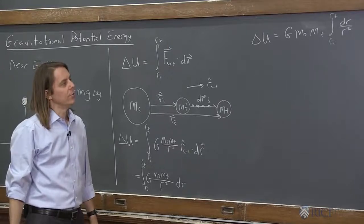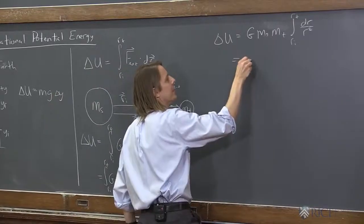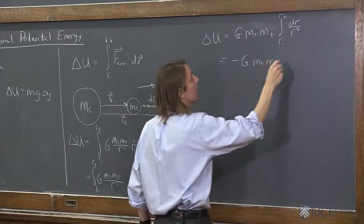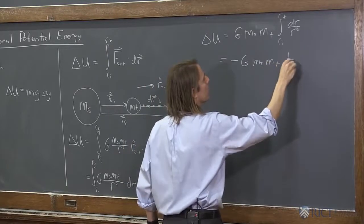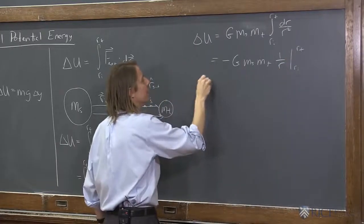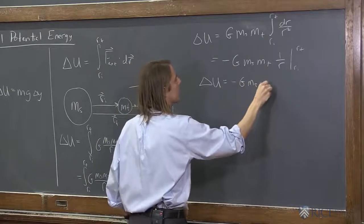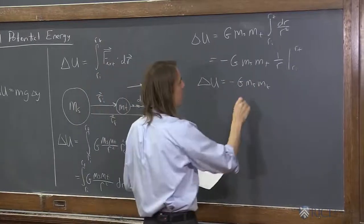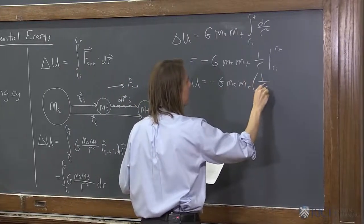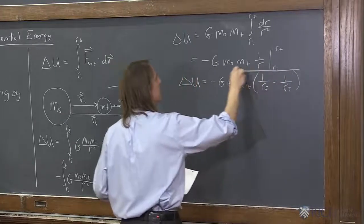Now we take the integral - it's just the integral of r to the minus 2, which is minus r to the minus 1. So we get a minus sign from the integration: G m source m test times 1 over r, evaluated from ri to rf. Then ΔU equals minus G m source m test times (1 over rf minus 1 over ri), and that's really it.